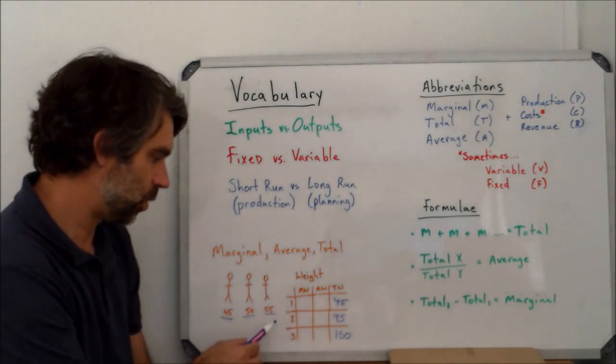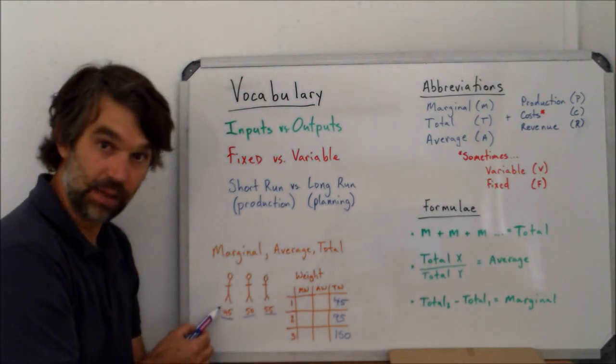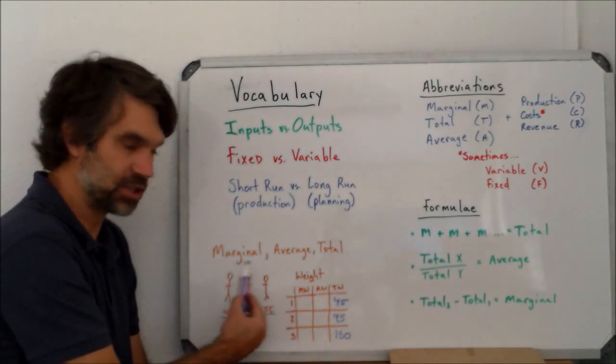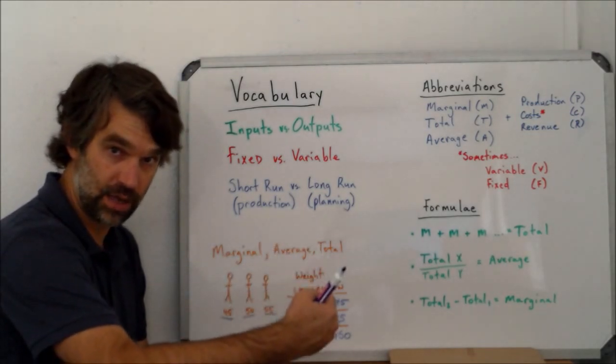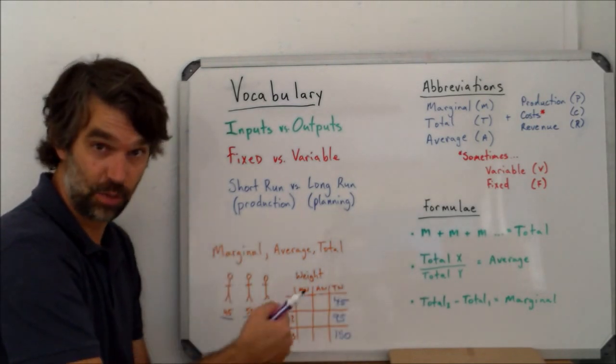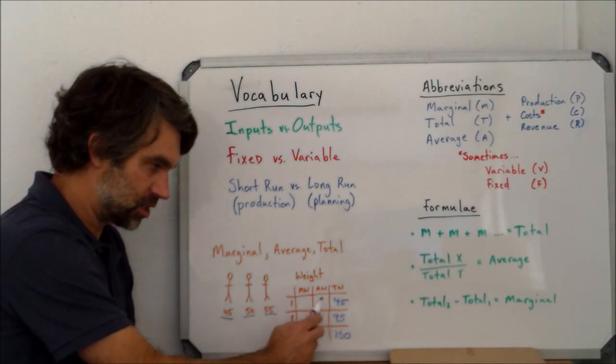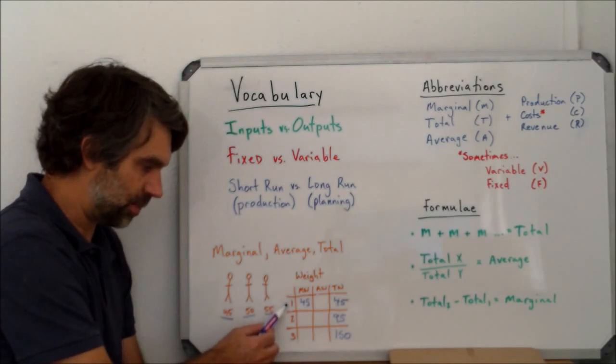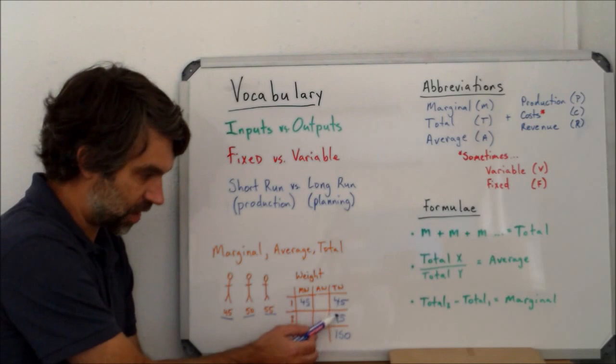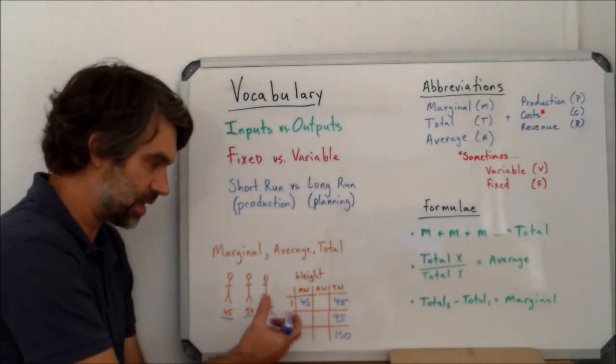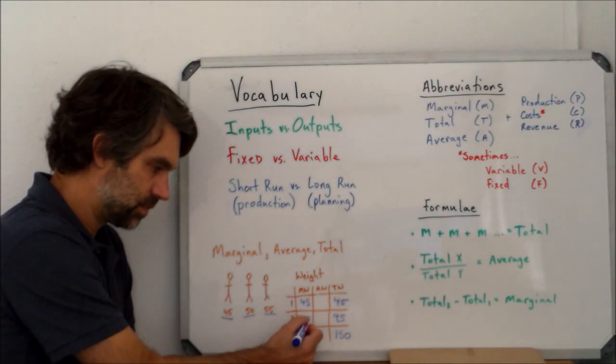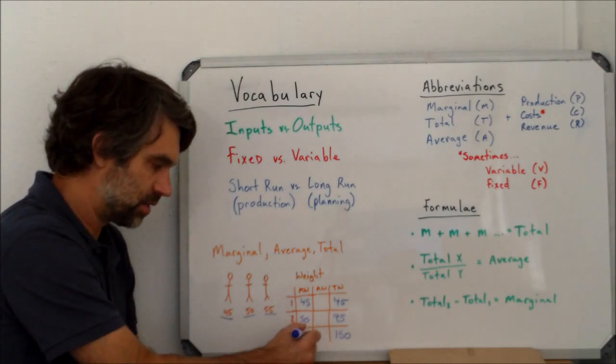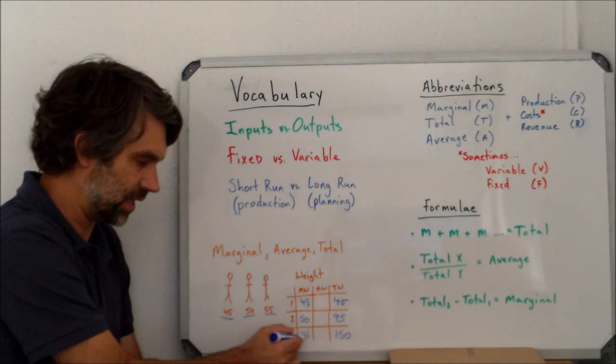When I went from having nobody to having somebody, I went from nothing to having 45, so the change was a marginal change. Remember marginal means when I add one more. So I went from having zero people to having one, so the marginal weight is the change in the total weight, that's 45. When I go from one person to two people, the total weight changed from 45 to 95. That is a change by 50, so the marginal weight is 50. For this person, it's going to be 55 because 95 to 150 is a change of 55.